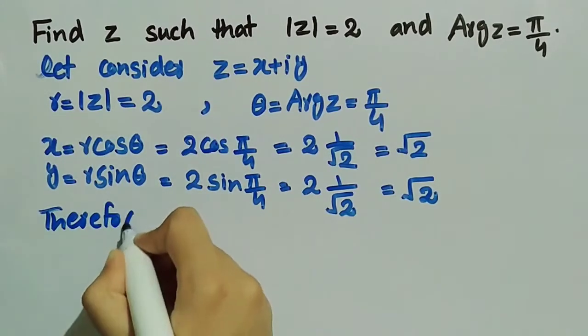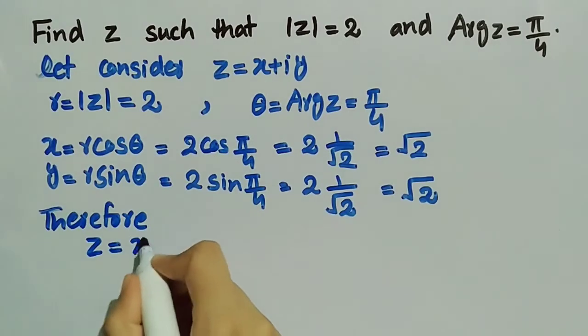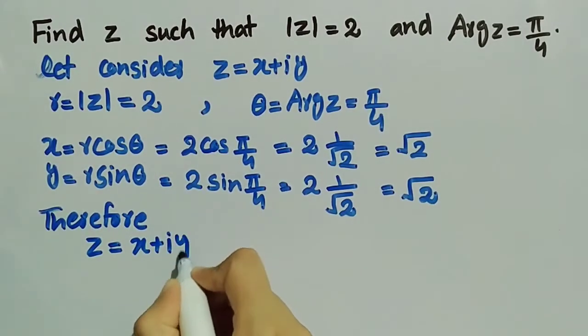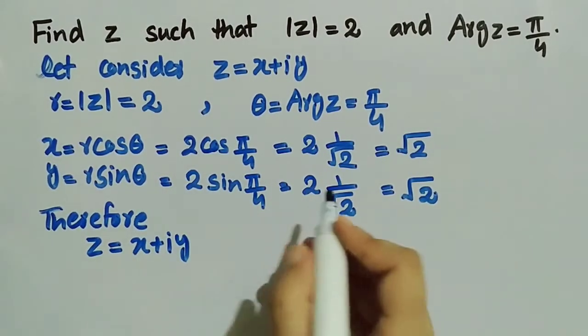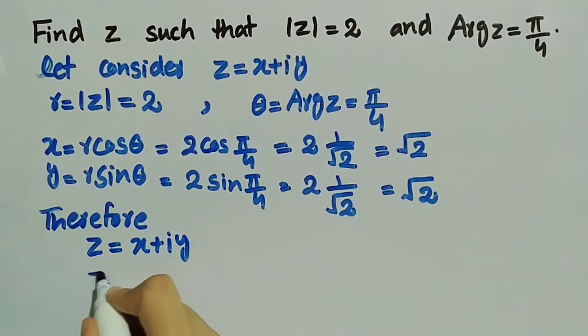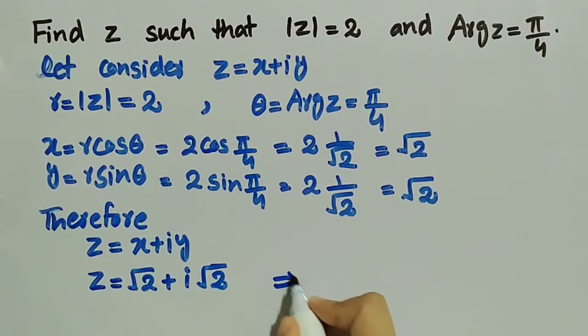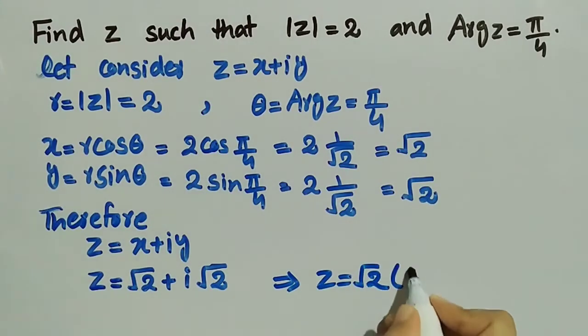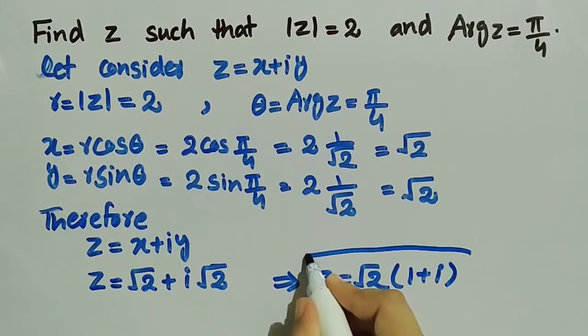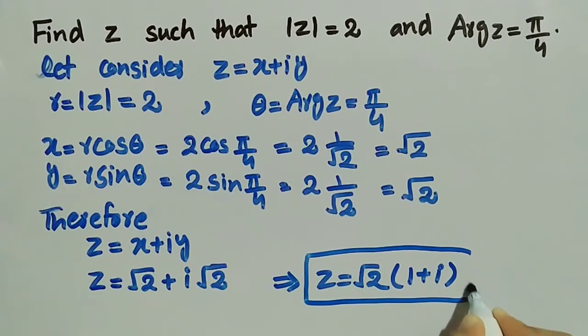Therefore, we can write z is equal to x + iy. Now we will substitute the value of x and y in this equation and get z is equal to √2 + i√2. So z is equal to √2 times (1 + i). This is the value of z.